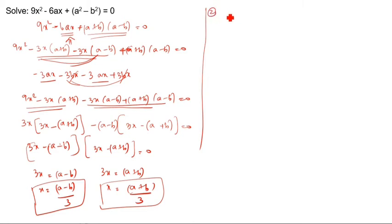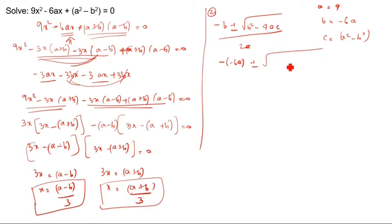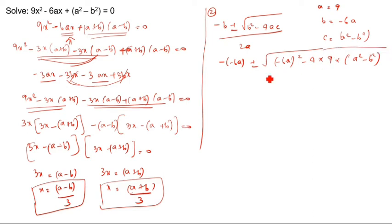We will see the second method now using the quadratic formula: x equals minus b plus or minus root of (b² minus 4ac) divided by 2a. Here a is 9, b is minus 6a, and c is (a² minus b²). Now we apply: minus of (minus 6a) plus or minus root of (minus 6a)² minus 4 times 9 times (a² minus b²), divided by 2 times 9.